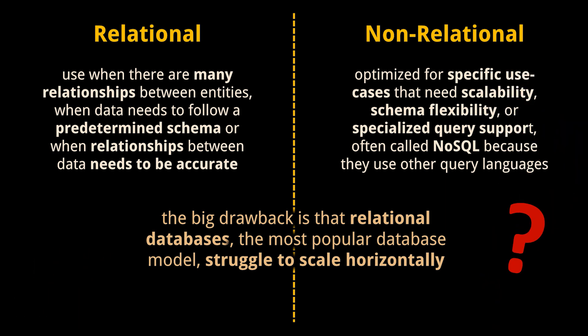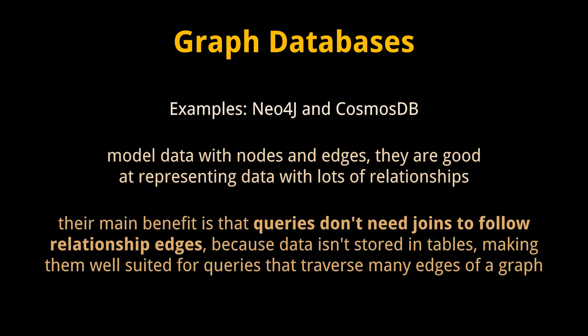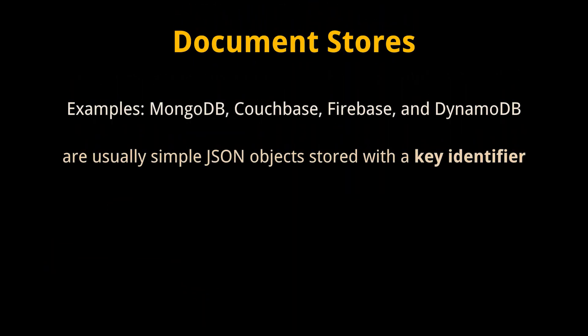There are many types of non-relational databases, each suited for a specific use case. First, graph databases such as Neo4j and Cosmos DB model data with nodes and edges. They are most like a relational data model because they are also good at representing data with lots of relationships. The main benefit is that queries don't need to join to follow relationship edges, so they're well suited for queries that traverse many edges of a graph. Next are document stores such as MongoDB, Couchbase, Firebase, and DynamoDB.